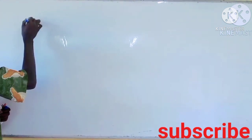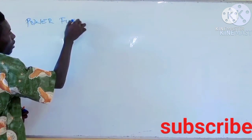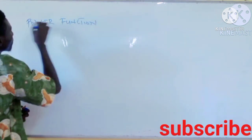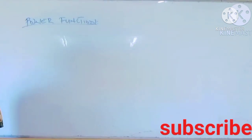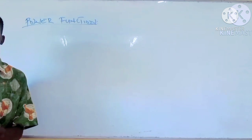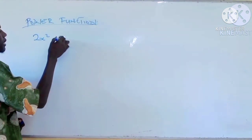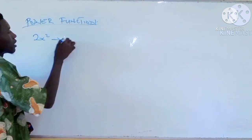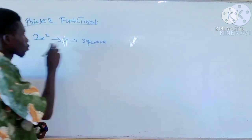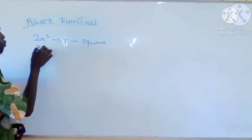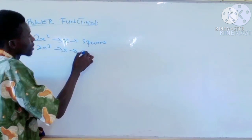For the power function, we first say we have the power and then we have the function. In the power function, we will talk about two things: the square and the cube. We say 2x squared — the highest power of x is a square. And 2x cubed — the highest power of x is a cube.